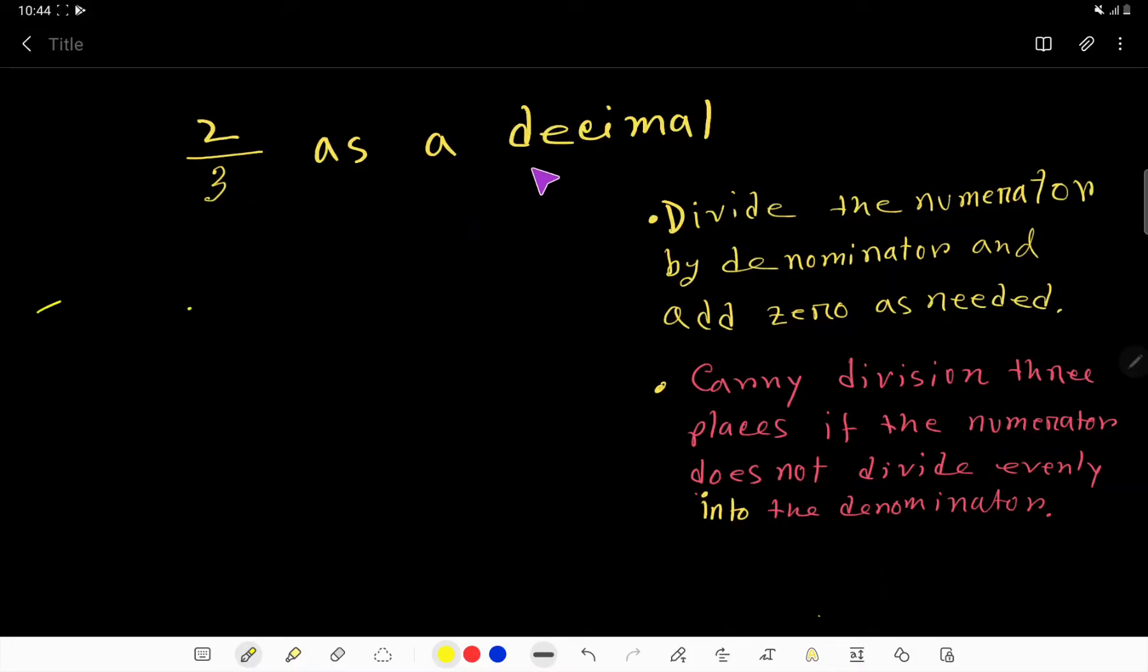2 over 3 as a decimal. Okay, so to convert this fraction to decimal, you have to divide this numerator by denominator. We will apply the long division method. We will divide this numerator by this denominator. Here, the denominator is 3 and the numerator is 2.